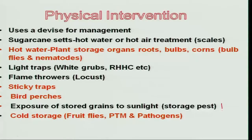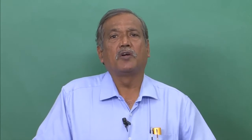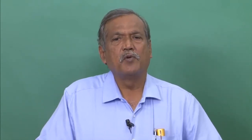Sunlight itself can serve as an important physical intervention for killing stored product insects. A lot of stored products harbor egg populations, larval populations, and grub populations. Exposing them to hot sunlight — more than 38 degrees centigrade for a few hours, maybe 4 to 5 hours — usually kills all these stages at one stroke.